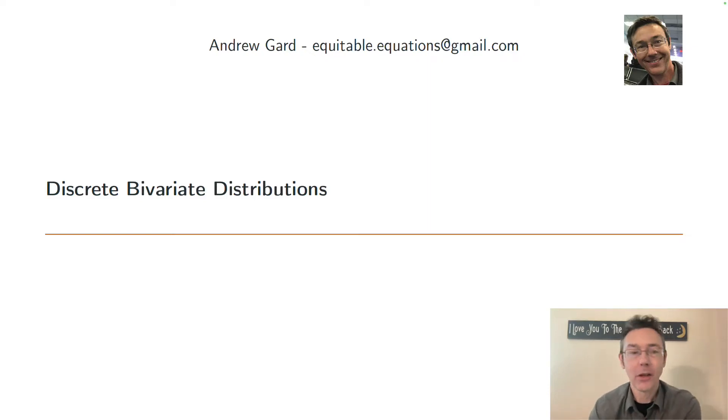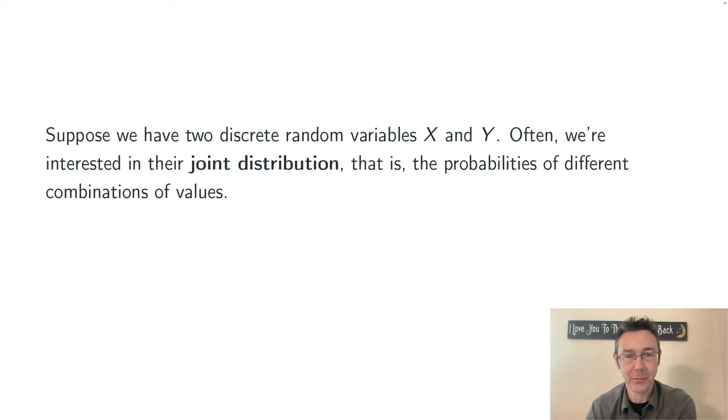Hey everybody. Today we're talking about bivariate distributions of discrete random variables. We're in a situation where we have more than one discrete random variable. In this video I'm going to stick to two of them, but the ideas generalize very directly. Call them X and Y, and we're interested in their joint distribution, that is, probabilities of different combinations of values of those two random variables.